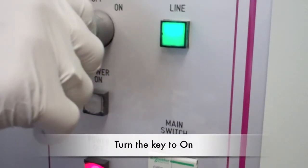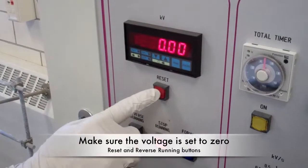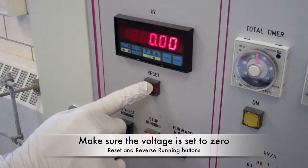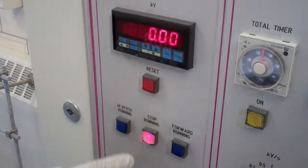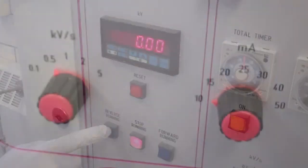To begin the test, turn the key to the on position. Make sure the voltage setting is set to zero. To check this, press the red reset button to reset the digital output to zero. Also press the reverse running button to return the voltage knob to zero.